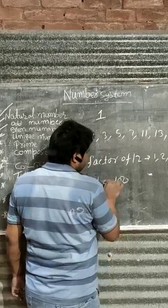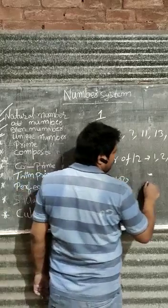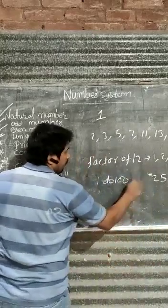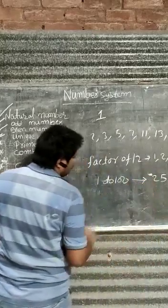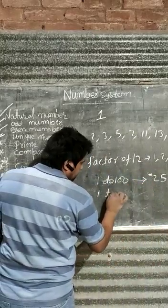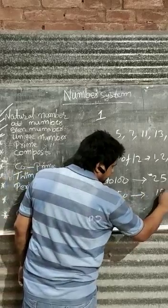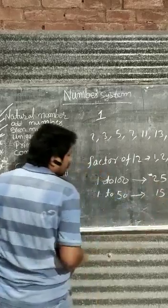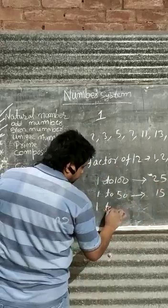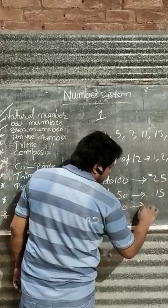1 to 100, 25 primes. And 1 to 50, 15 primes. And 1 to 30, 10 primes.